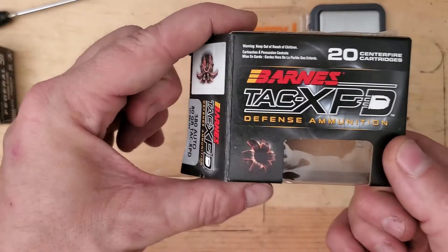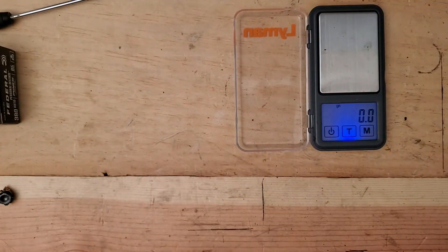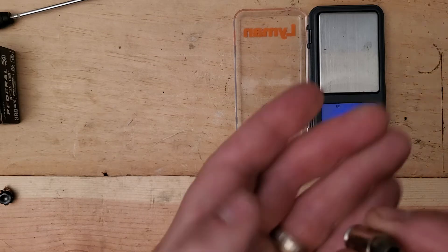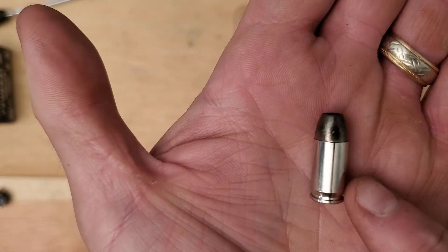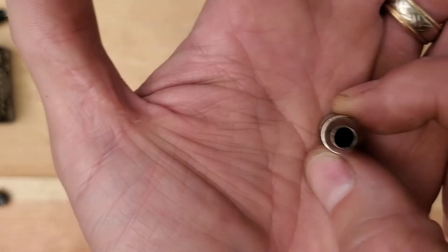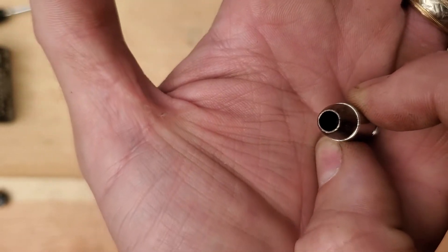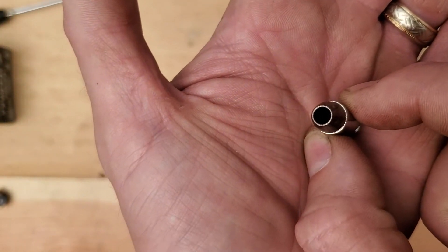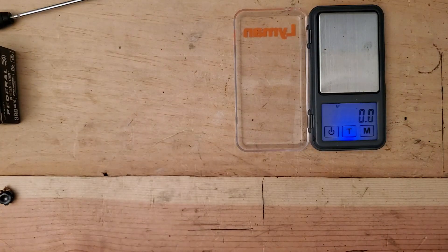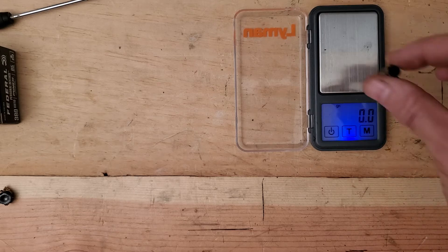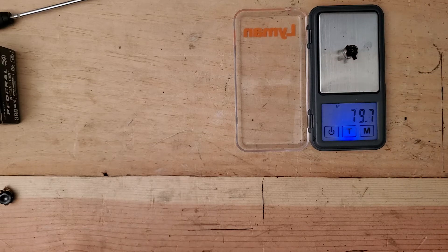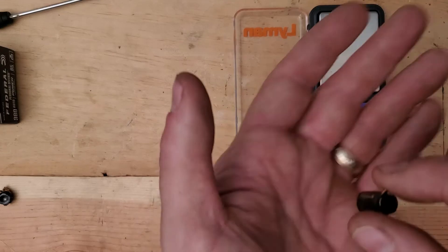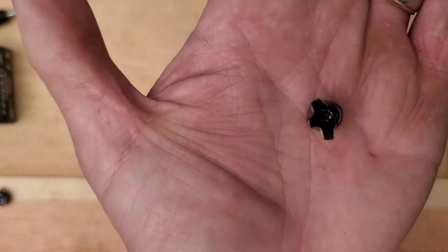Third up was our Barnes Tac XPD. Barnes Tac XPD. This is the unfired projectile. It's got our nickel case, the characteristic copper hollow point that is very deep, very deep hollow point from Barnes. This is supposed to be an 80 grain hollow point. We're going to weigh it. 80 grains, pretty much 100% weight retention. We expect that with an all-copper projectile.